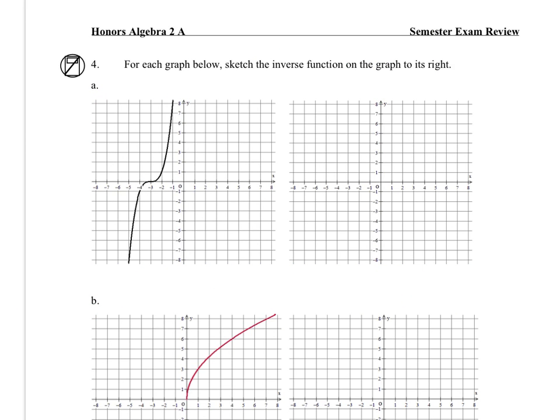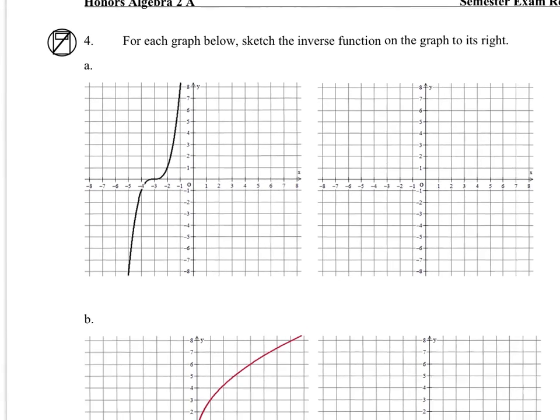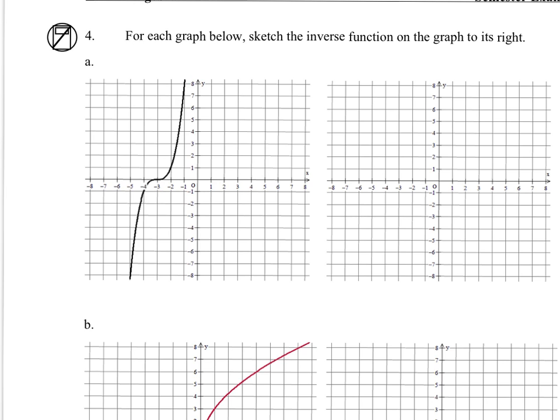Let's sketch the inverse graph. I like to write some key coordinates. The original function has points at (-5, -8), (-4, -1), (-3, 0), (-2, 1), and (-1, 8).